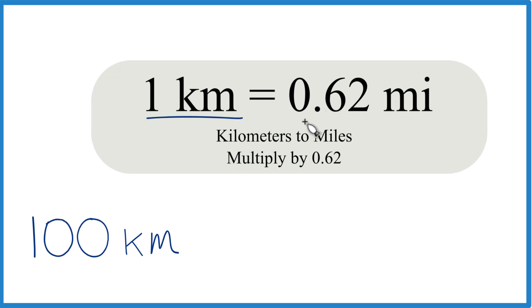One kilometer equals 0.62 miles. If you need more decimal places, you could use 0.621371, and some people just use 0.6 to simplify the math.